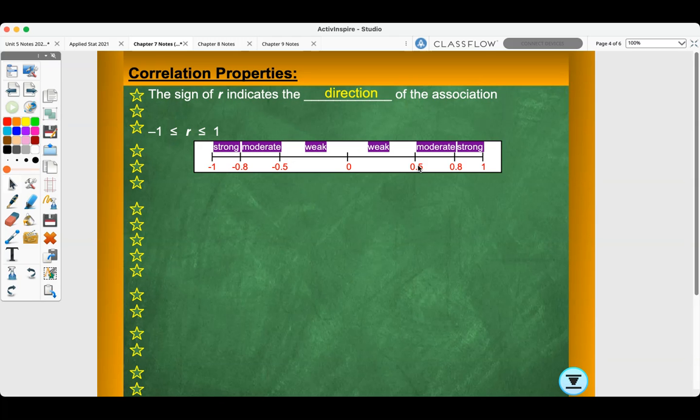Between 0 and 0.5, the correlation is weak. The same with 0 to negative 0.5. Then between negative 0.5 and negative 0.8 is moderate. Same with the positive. And then it's strong from 0.8 to 1.